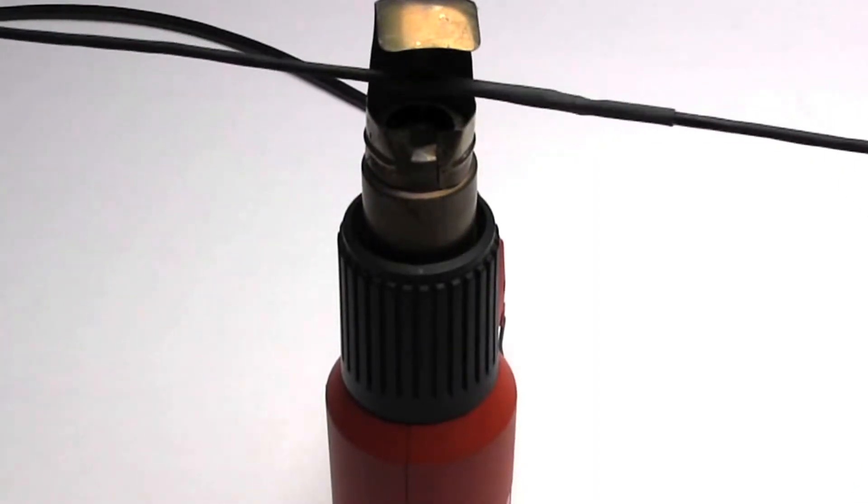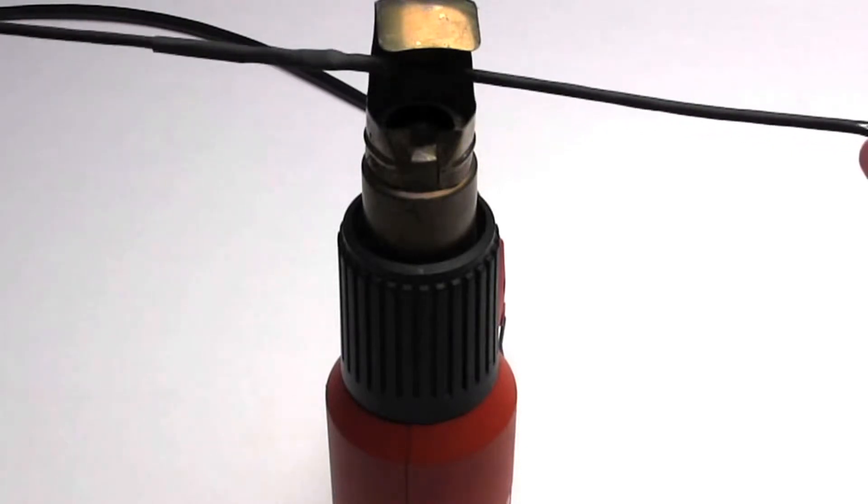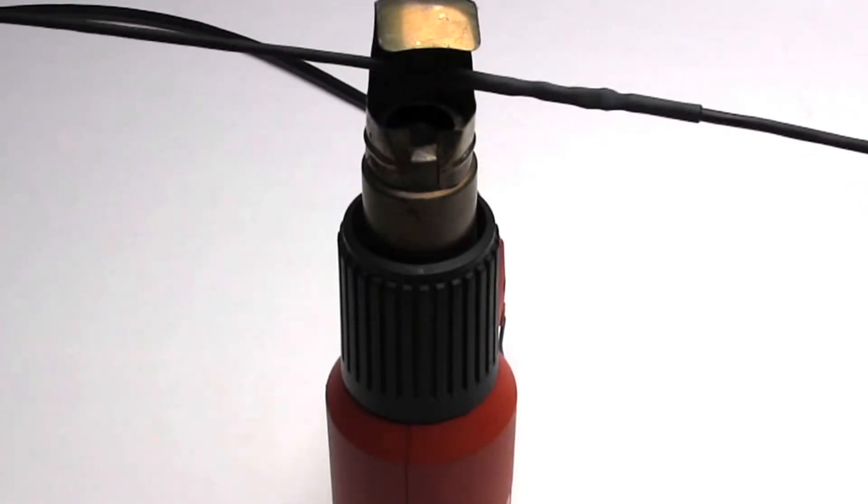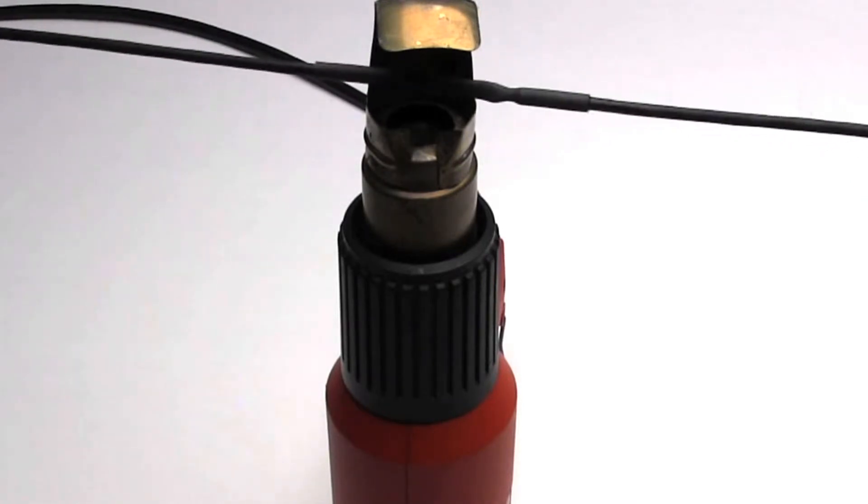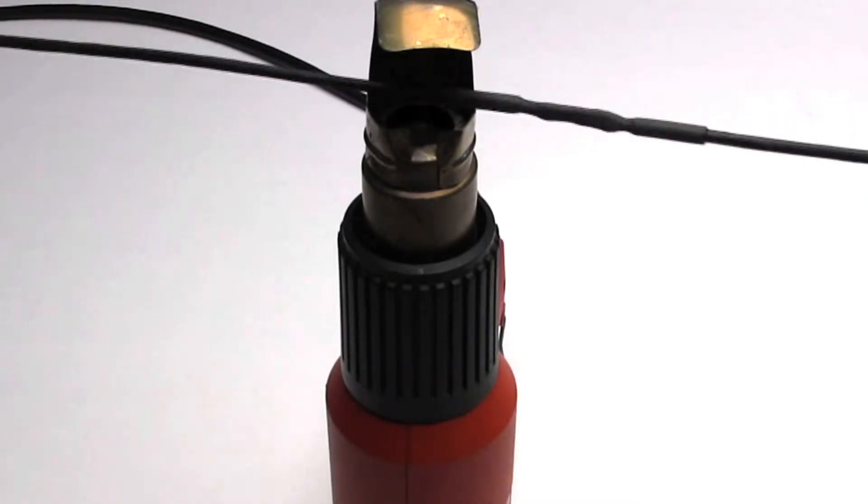Use the heat gun and notice the heat shrink forming tightly to the cable and splice. The adhesive lined heat shrink will have a glossy look once the glue has flowed. Be careful not to overheat the heat shrink. If overheated, it will start to warp and eventually melt away.